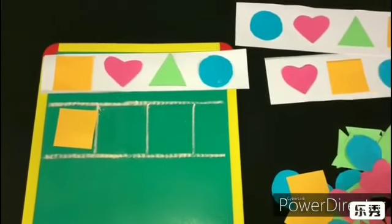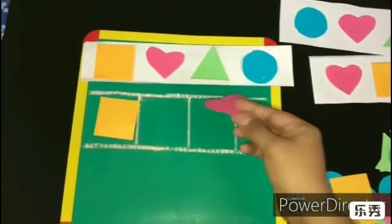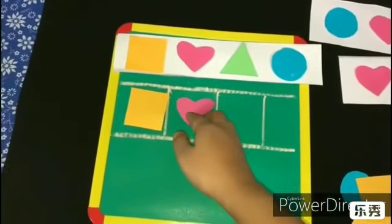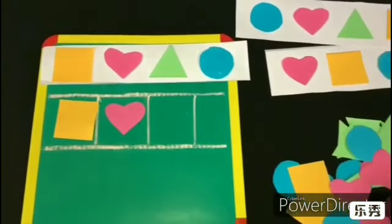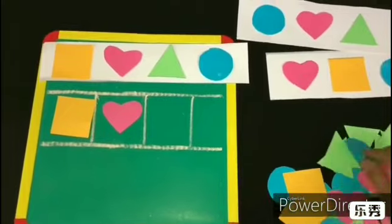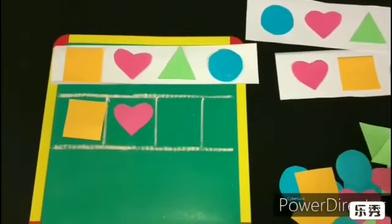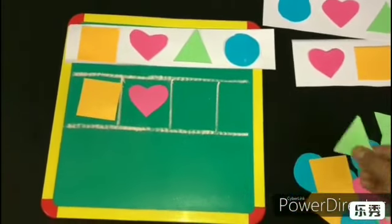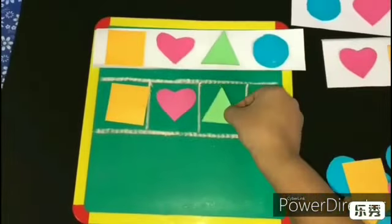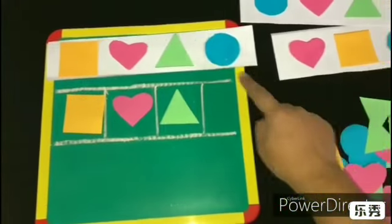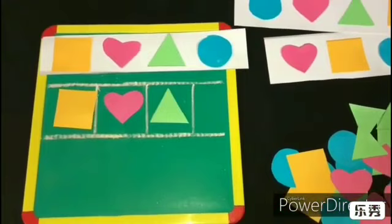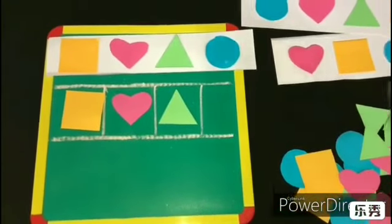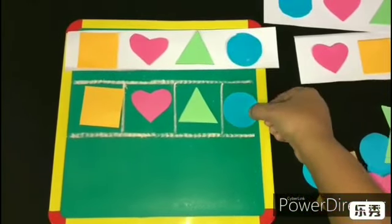The second shape is heart. Now let's find and place it here. The third shape is triangle. We have to place according to the given pattern. The fourth is circle. We are going to place the circle shape here.